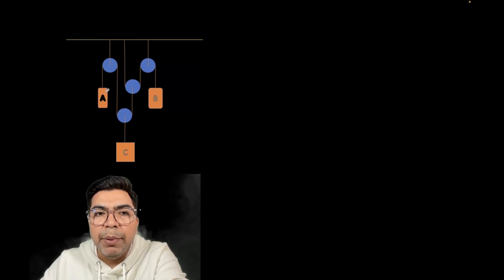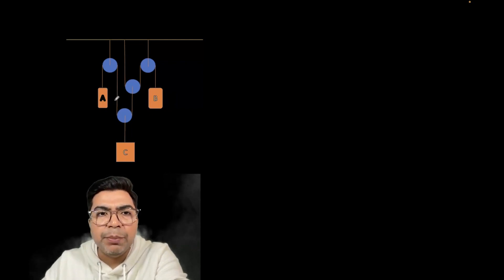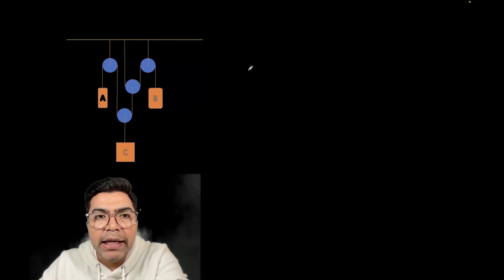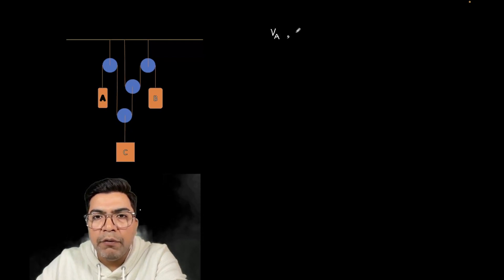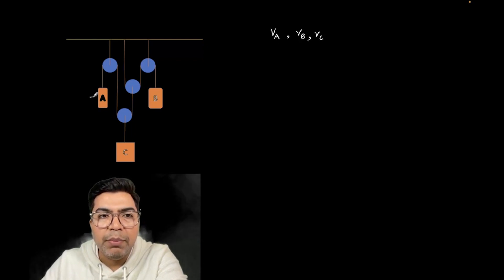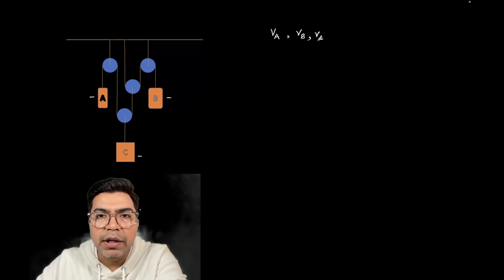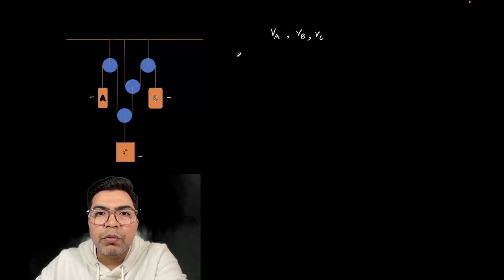So what I'm going to do is break down the concept into steps — three simpler steps. And if you follow these three simple steps, you will be able to find any relation between VA, VB, VC in multiple pulley problems. So what we have to do is find the relationship between the velocity of A, velocity of B, and velocity of C. So these three are blocks A, B, and C. We have to find the relation between VA, VB, and VC. So what we'll do is, there are steps, and we'll start with step 1.